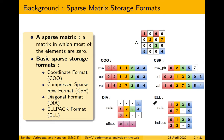Then comes ELL. ELL is also a very specialized format for matrices where the number of non-zeros in each row is almost equal. We create a two-dimensional array of the non-zeros, removing zero values and packing all non-zeros into this format. In doing so, we lose the column information, so we store column information in the same fashion, but the row information is implicit in this format.